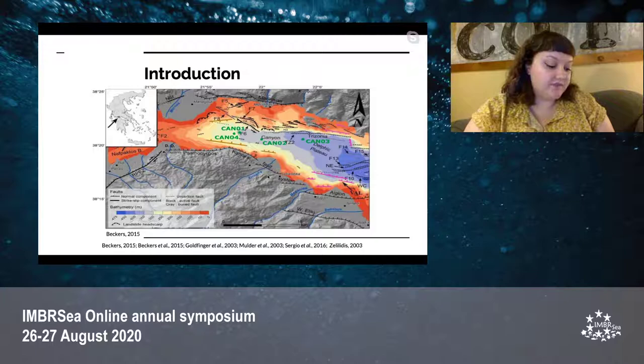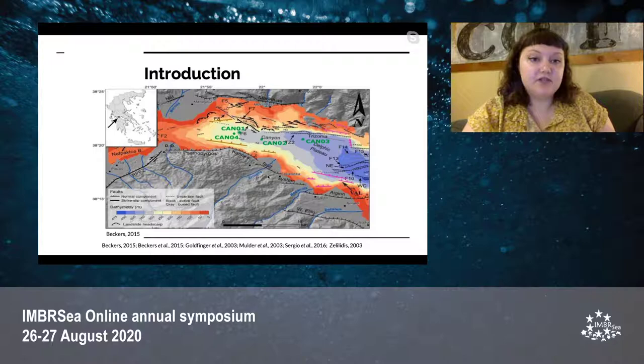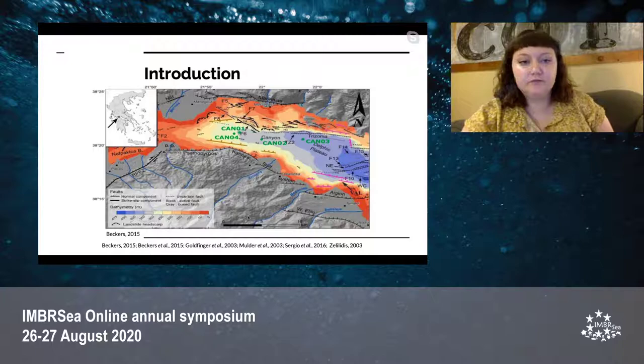Earthquakes can trigger large mass flows, which cause large turbidity currents with a large spatial extent and high level of material. Also specifically within this region, we potentially expect to see simultaneous slope failure from multiple deltas that could be recorded within the canyon.